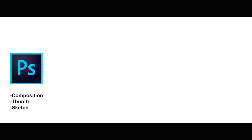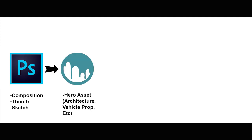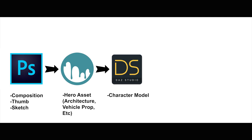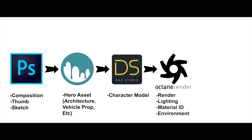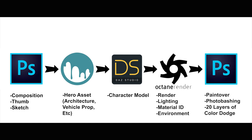As an example: you start off in Photoshop where you get your composition, thumbnail, and sketch figured out. After that, you take it into 3D Coat and get your hero asset. After your hero asset, you go into Daz and get your character model. Then you take it all into Octane and render it all together into the scene, and at the very end you go back to Photoshop for your paint over and final edits.